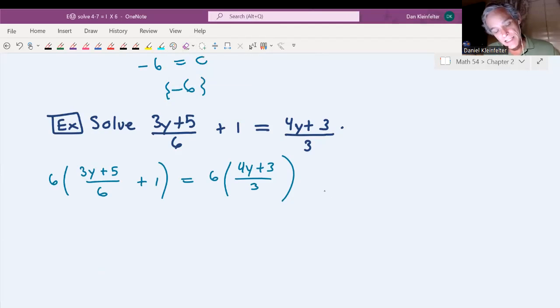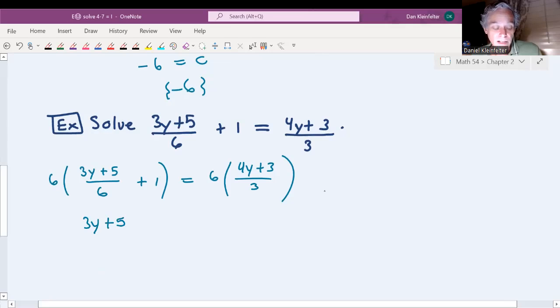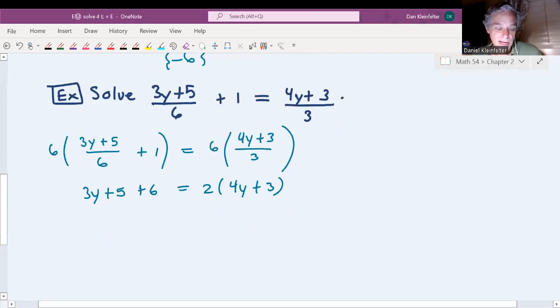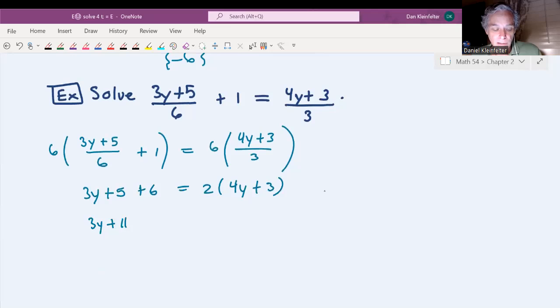So then on the left side, 6 times 3y plus 5 over 6 just gives the 3y plus 5. 6 times 1 gives 6. On the right side, we have 6 times 4y plus 3 over 3. The 6 divided by 3 just gives 2, so we'll have 2 times 4y plus 3. And now the fractions are gone. We'll combine like terms having 3y plus 11 equaling 8y plus 6.